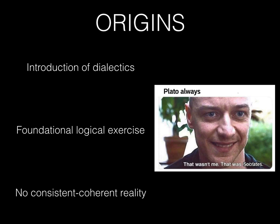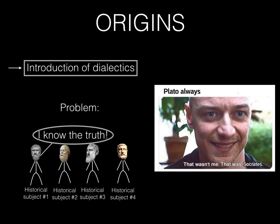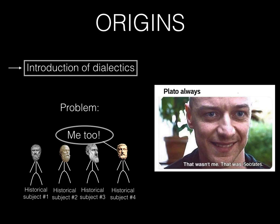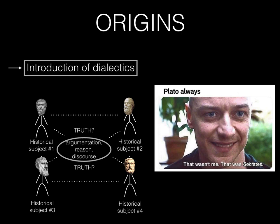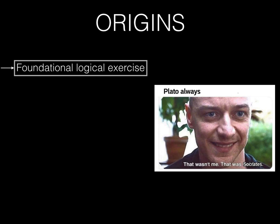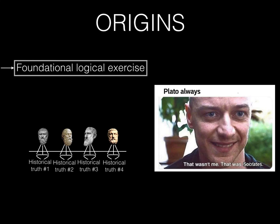In order to understand the origin of dialectics, we have to understand why it was necessary in the first place. Dialectics became necessary because of a problem of truth — namely that people claimed to know the truth in an absolute way, but that these absolute claims to truth were internally contradictory in regards to the realm of other subjects. Moreover, this claim to absolute truth tended to elevate a subject above temporal relative discursive processes like argumentation, reason, and regular normative discourse. In these processes, how are we to discern the truth from mere opinion? How are we to know what is true? Dialectics is thus a foundational logical exercise in order to mediate the truth in temporal appearances.